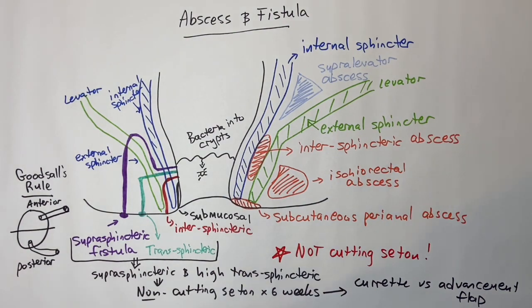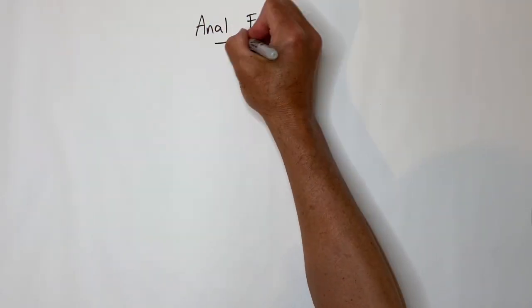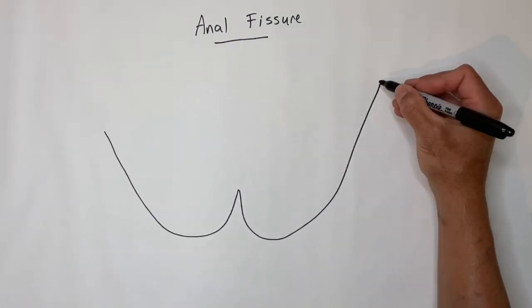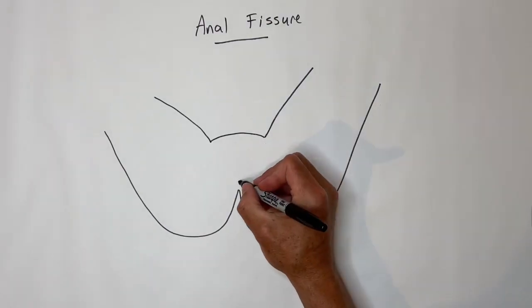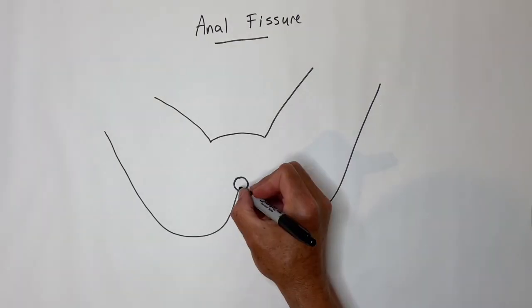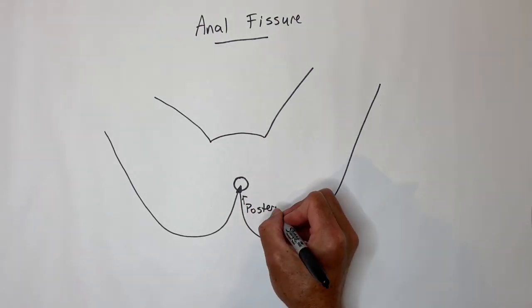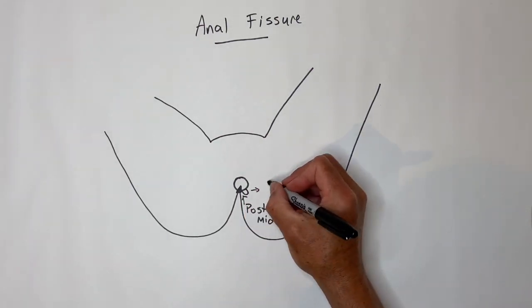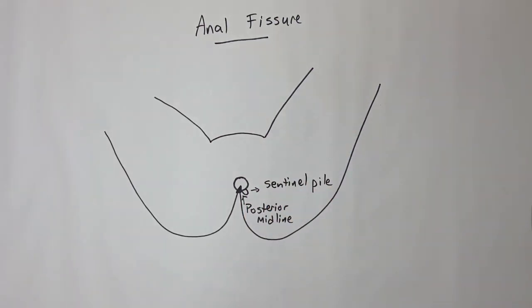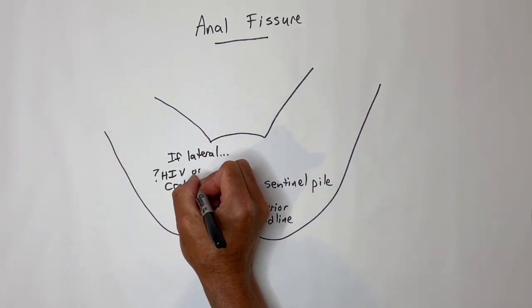Anal fissures are painful and related to constipation. Anal fissures are a common source of rectal bleeding in children. They are usually in the posterior midline. They can have a sentinel pile, which is basically a skin tag near the external extent of it. Lateral anal fissures make you think of Crohn's disease or HIV.